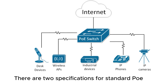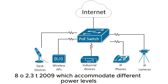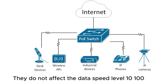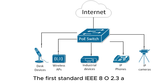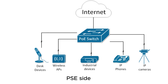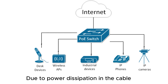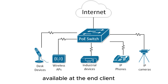There are two specifications for standard PoE implementations: IEEE 802.3af (2003) and IEEE 802.3at (2009), which accommodate different power levels. They do not affect the data speed — 10, 100, or 1,000 Mbps — to the PD. The first standard, IEEE 802.3af PoE, provides up to 15.4 W of DC power per switch interface (PSE side). Due to power dissipation in the cable, only 12.95 W of this is guaranteed to be available at the end client.